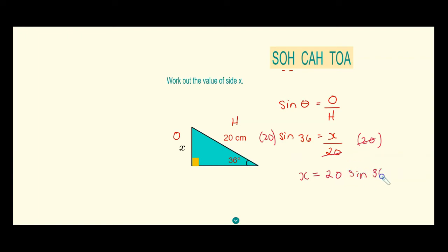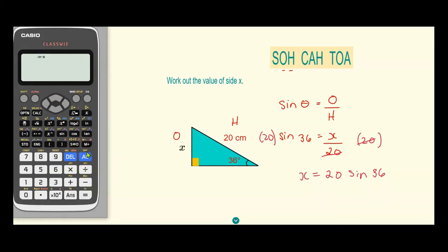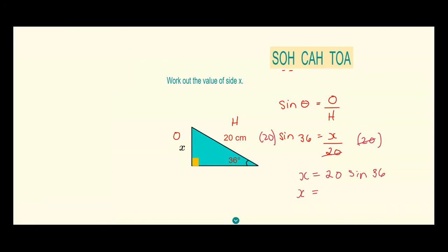We need to find the value of x using the calculator. Using the emulator, we click 20 times sine 36, close bracket, equals, and get 11.755. Rounding to one decimal place, that's 11.8 centimeters. So x equals 11.8 centimeters.